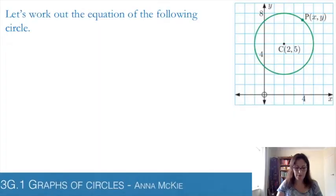Working out the equation of the following circle, we can see our center is here at (2, 5) and P represents any point on that circle, and we'll represent that by x and y. Have a think what the radius of this circle might be.